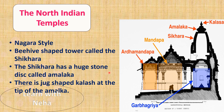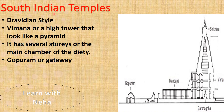Temples in south India were built in the Dravidian style. One important feature of the Dravidian style is the vimana, or high tower, which looks like a pyramid with several stories of different sizes built over the garbhagriha. Another important feature is the gopuram. Temple architecture of the south became famous under the Cholas. The Kailasa Temple, the Brihadeeswarar Temple, and the Rajaraja Temple are good examples of this style of architecture.